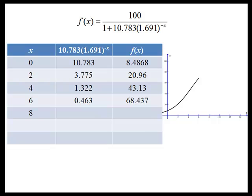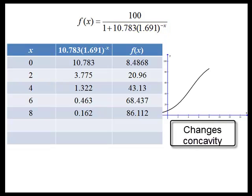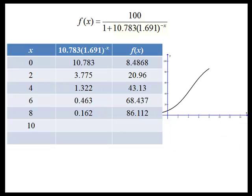Now as we get a little bit larger, that decrease in the exponential piece is going to slow down, which is going to cause the rate of increase in f of x to decrease. Again, as we get higher, the exponential piece gets smaller but doesn't decrease as quickly, so the function doesn't increase as quickly.